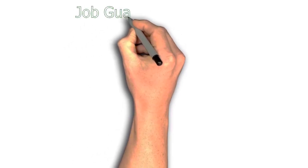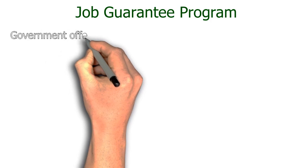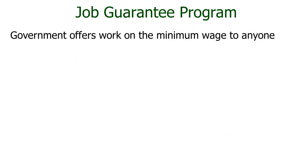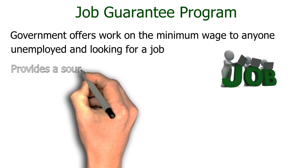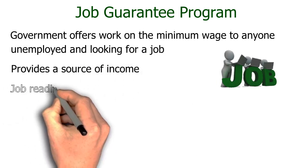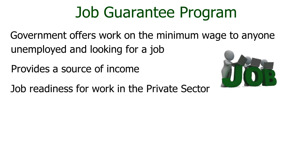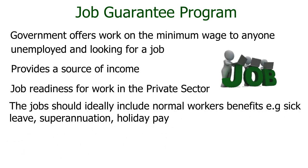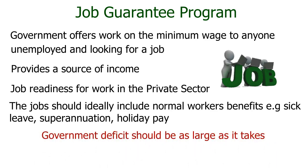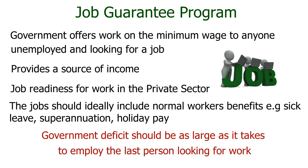So how can full employment be achieved? The major policy measure followers of modern monetary theory advocate in pursuit of full employment is a job guarantee program where the government offers anyone who is out of work a secure job on the minimum wage as a transitional measure to give them both an adequate source of income and job readiness for a move into employment in the private sector should a position become available. The jobs should ideally include normal workers benefits such as sick leave, superannuation and holiday pay. This provides a pool of work-ready employees that enable the economy to function at its full potential. It also provides a measure of how large a government deficit should be. The government deficit should be as large as it takes to employ the last person looking for work.